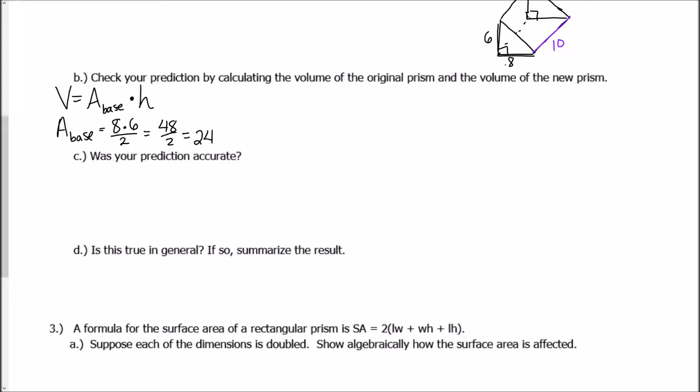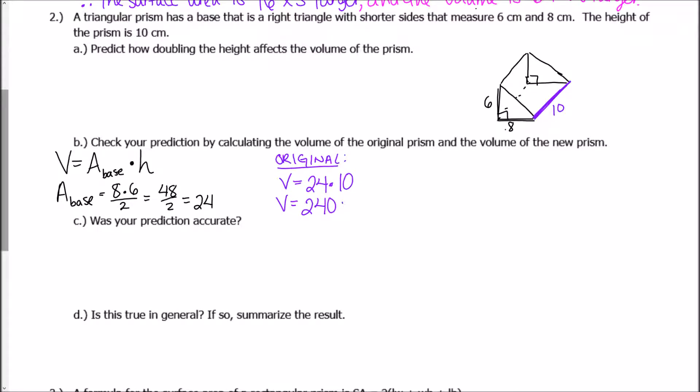So for my original prism, the volume is equal to the area of the base, which is 24, times the height of the prism. And we know the height of our prism here is 10, because that's the length that connects our two bases together. So the volume of the original one is 240 centimeters cubed.